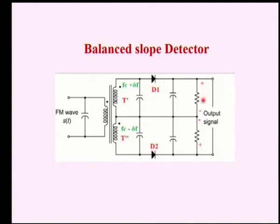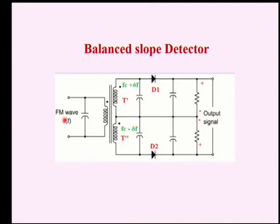The output is arranged with plus-minus and minus-plus polarities in accordance with the dot convention of the transformer. The frequency modulated wave is provided to the primary of the transformer, and the output gets split into two — part of the output is in the upper secondary coil and the remaining is in the lower secondary. We will see how the input FM signal is converted into an amplitude variation signal.